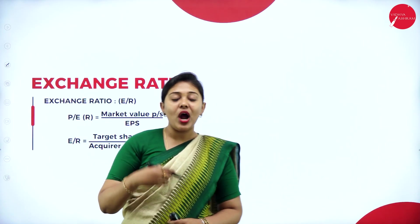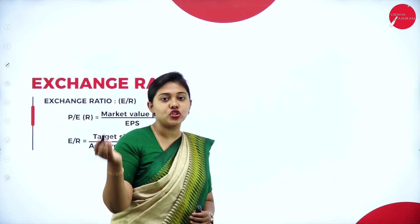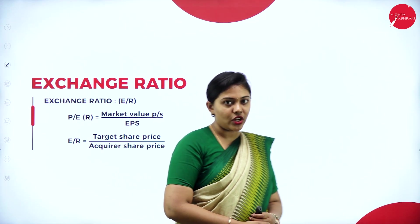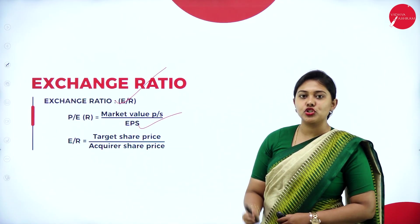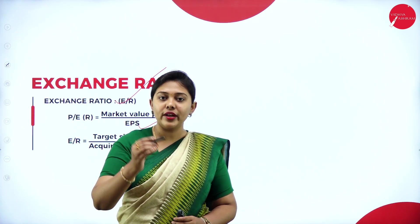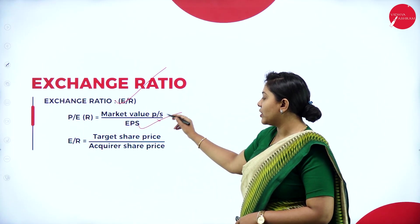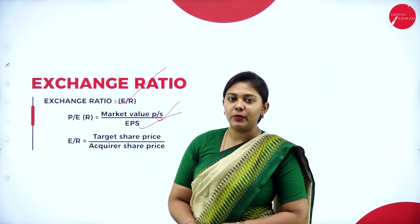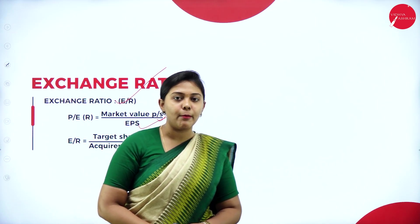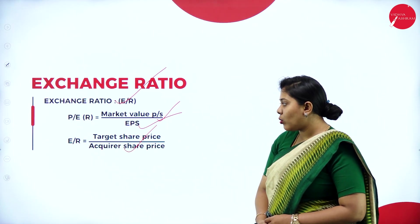We need to understand the calculation of price-to-earnings ratio and the calculation of exchange ratio. The formula for price-to-earnings ratio is market value per share divided by EPS. To calculate EPS, the formula is profit after tax divided by total number of shares. The exchange ratio formula is target share price divided by acquirer share price.